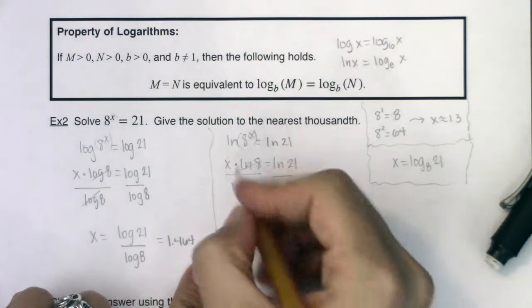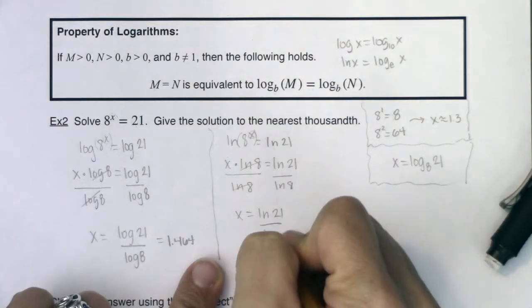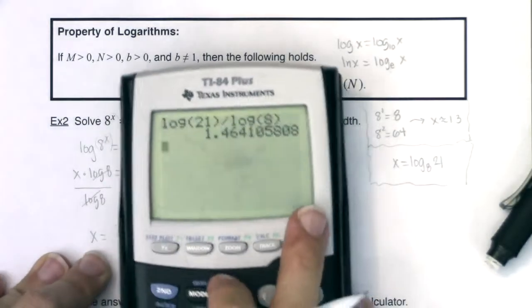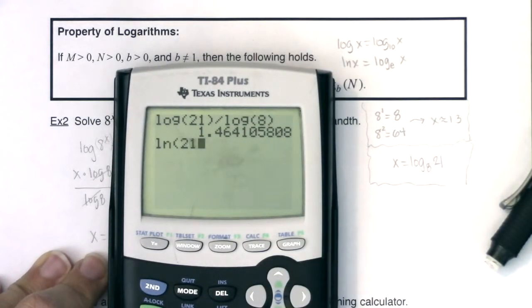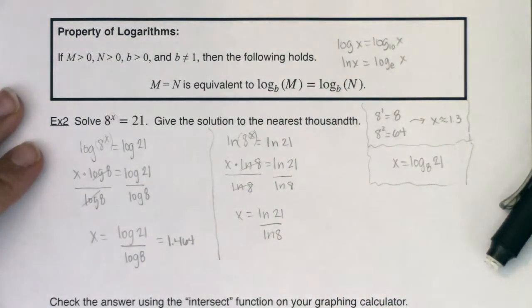And then I can divide by ln of 8 on both sides. These are going to cancel, and I'm going to get x is equal to ln of 21 over ln of 8. And let's see what that calculator command gives me. So let's do ln of 21 divided by ln of 8. And you'll see I get the same answer, 1.464.